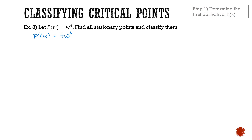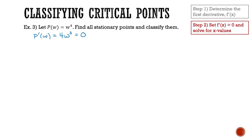Next, we're going to set this first derivative equal to 0 and solve for our w values. So 4w cubed equals 0, and this only happens when w is equal to 0. So this is our critical w value.